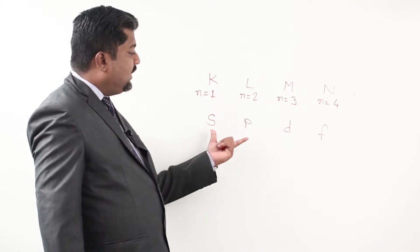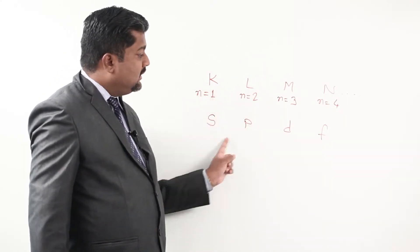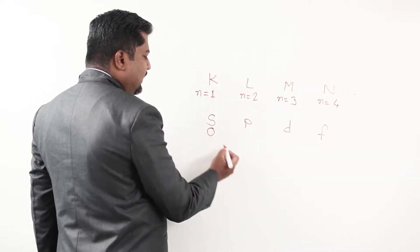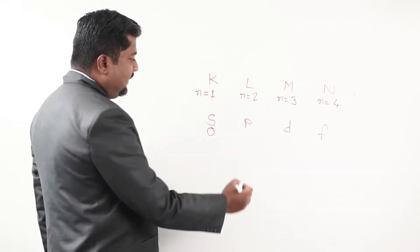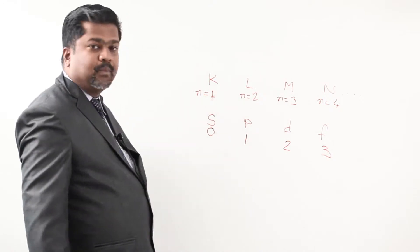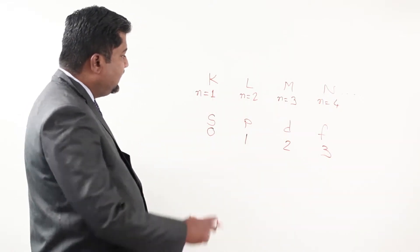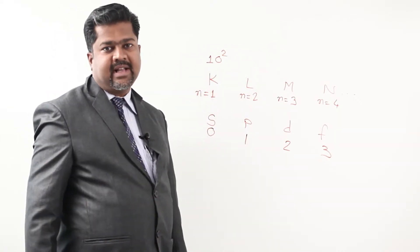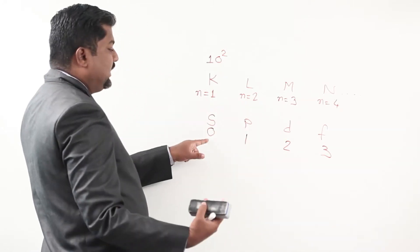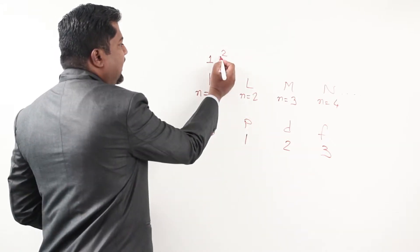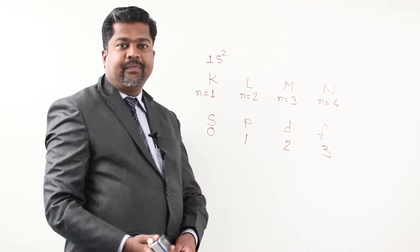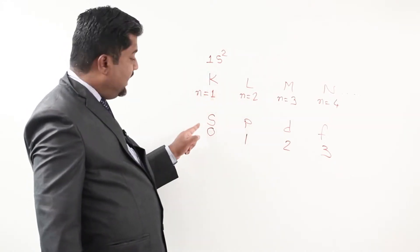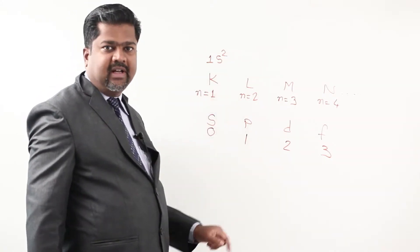It is not necessary that all subshells are present in every shell, such as K or L. The subshell labels correspond to numbers: 0 is called S, 1 is P, 2 is D, and 3 is F. Writing the number 0 caused confusion — for example, '1 0 2' could be read as '10 squared.' To eliminate this confusion, the number 0 is written as S. So we write 1S2, meaning: main shell 1, subshell S, with 2 electrons in that subshell.